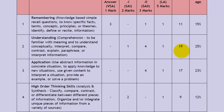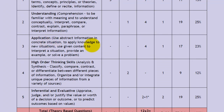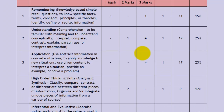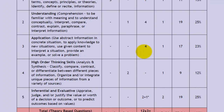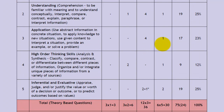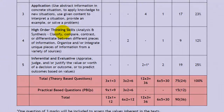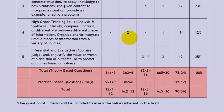Understanding totals to 19 marks. Questions based on application: there will be 4 short answer questions of 3 marks each and 1 long answer question of 5 marks, totaling to 17. Questions based on high order thinking skills: there will be 2 short answer questions of 2 marks each and 1 question of 5 marks, totaling to 9.